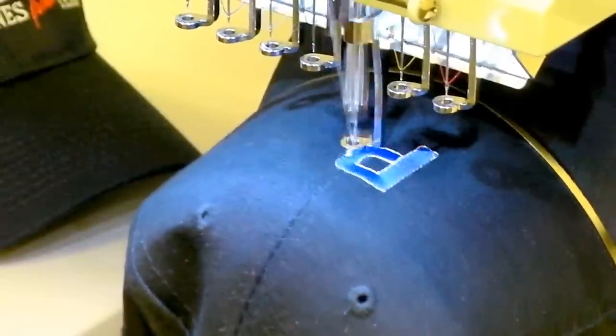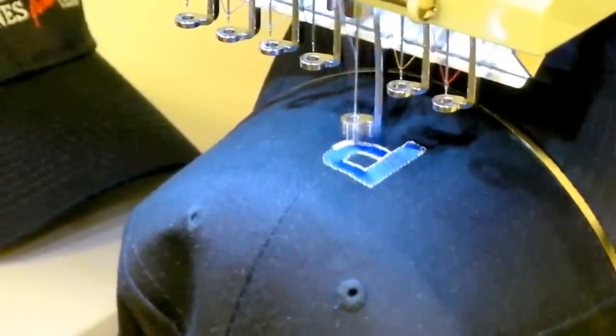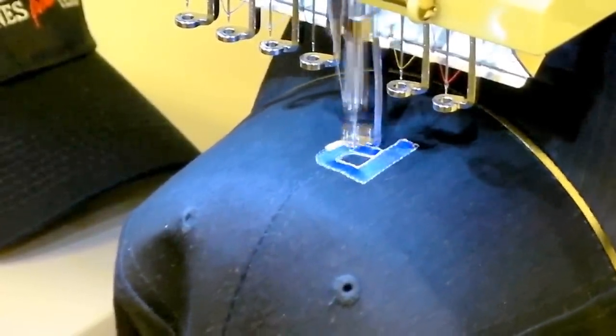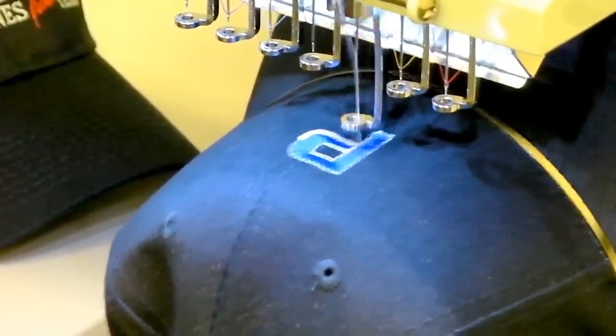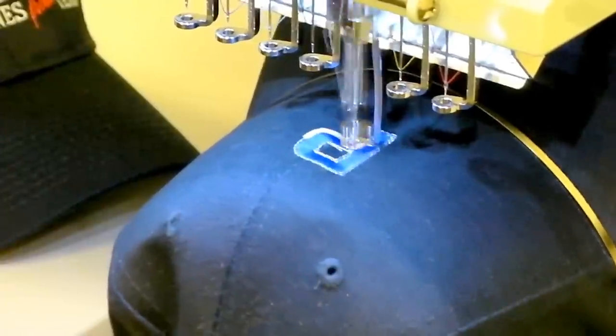And as you can see with each section how neatly the machine sews the stitching of each color and nicely trims between each section before moving on and see how neatly the stitches align as we go from section to section.